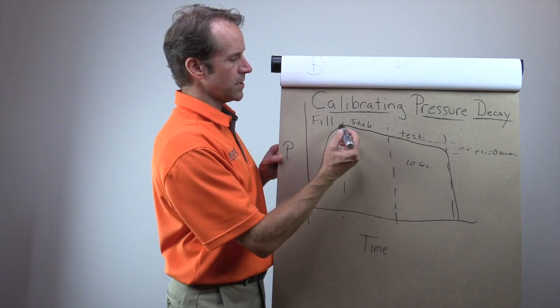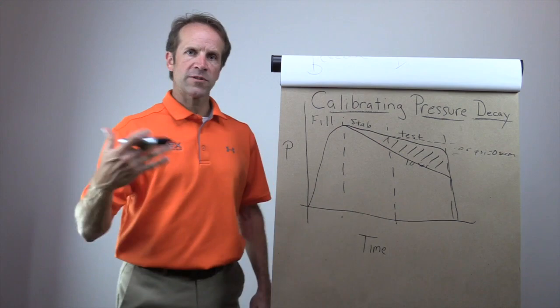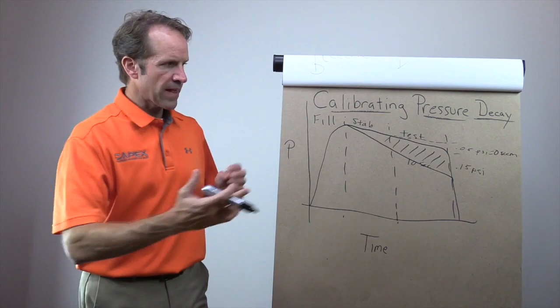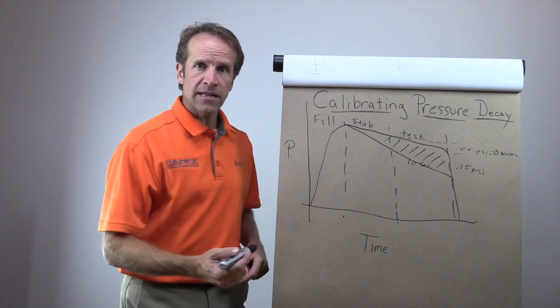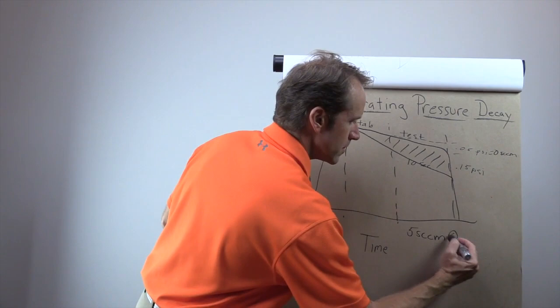So this might be the curve, how it looks with the leak standard introduced. Again, same part. So the leak standard is going to have greater pressure loss. So that space there represents greater pressure loss. So let's say that equals 0.15 psi over that 10 seconds versus 0.05 psi over that 10 seconds.